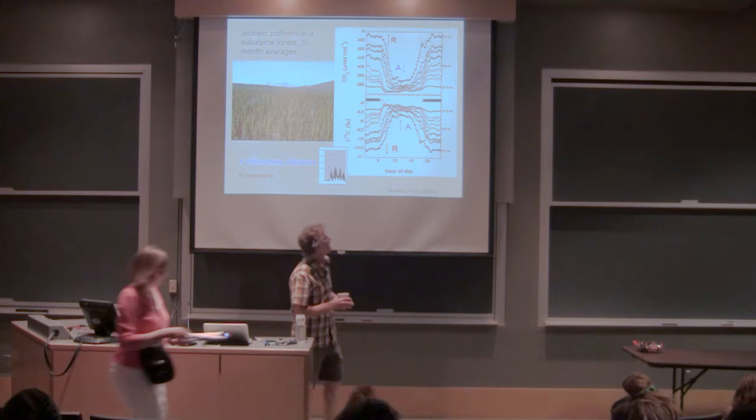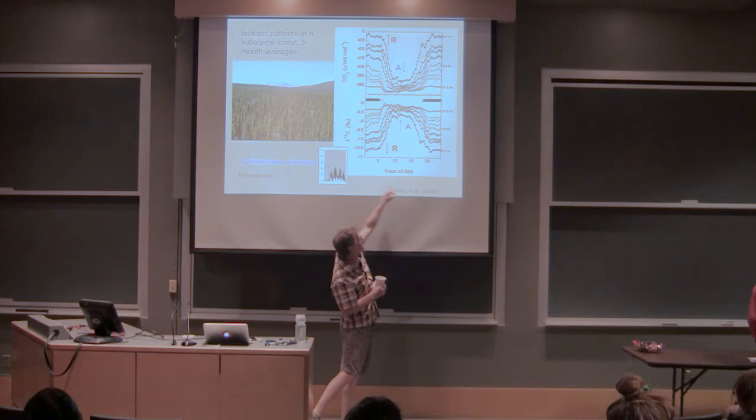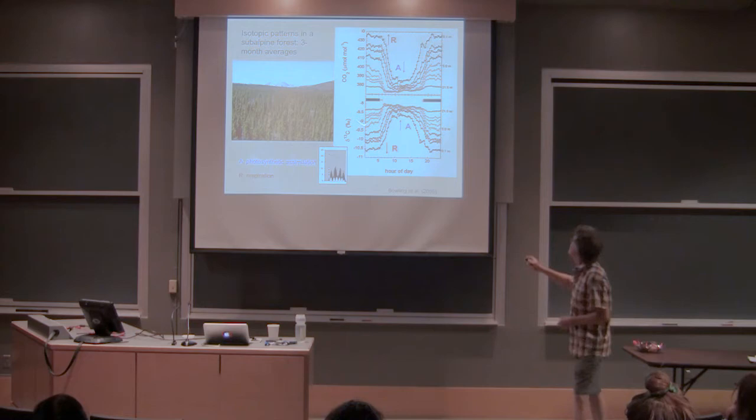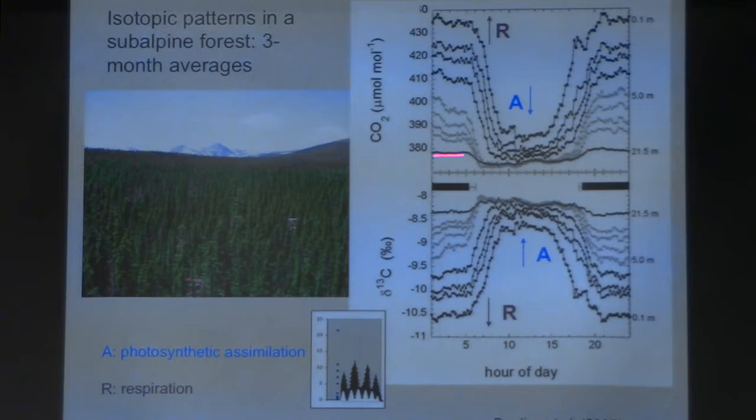These are averages over a whole summer — about three months — plotted midnight to midnight on the time axis. The top pattern is just like the one from the forest with the diamond tree diagram. This is the highest inlet on our tower at 21.5 meters, and this is the lowest inlet, going in order. At night there is buildup of respiratory CO2, and in the morning there's a decrease — and that decrease is caused by atmospheric mixing, not by photosynthesis.